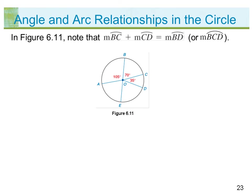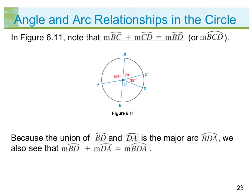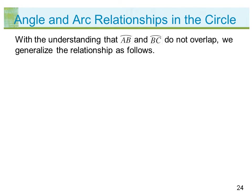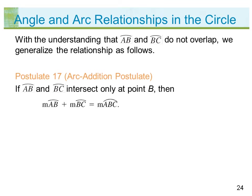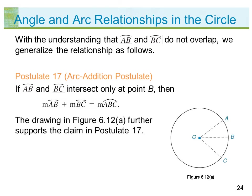In figure 6.11, the measure of arc BC plus the measure of arc CD equals the measure of arc BD (or arc BCD). Because the union of arc BD and arc DA is the major arc BDA, the measure of arc BD plus the measure of arc DA equals the measure of arc BDA. With the understanding that arc AB and arc BC do not overlap, we generalize the relationship as follows.